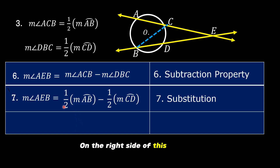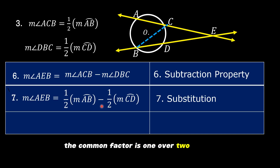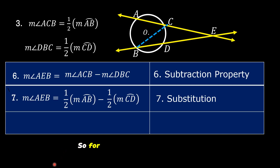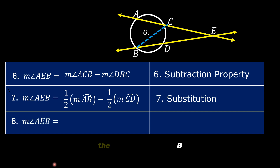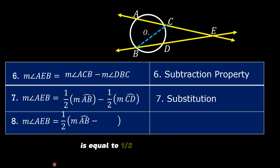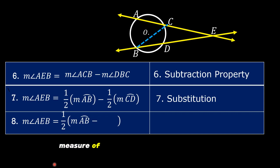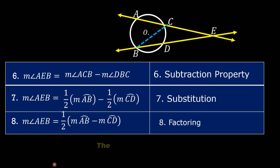On the right side of this equation, we can see that there is a common factor. The common factor is one-half. We are going to factor this out. So for our last statement, the measure of angle AEB is equal to one-half times the quantity: measure of arc AB minus measure of arc CD. The reason is factoring.